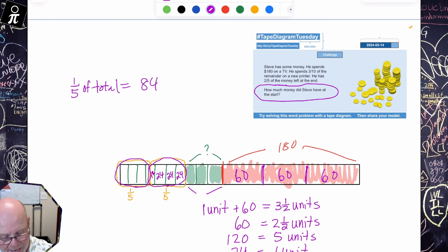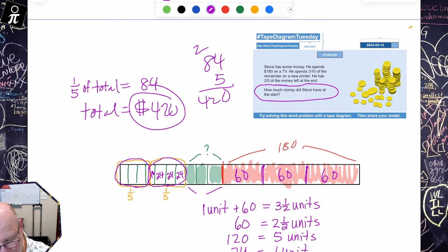So one fifth is equal to 84. So I got to times that by five. So the total total is whatever 84 times five is, it's $420. So there you go. So how much did Steve have at the start? He had $420. That was a good one. I kind of like that problem.